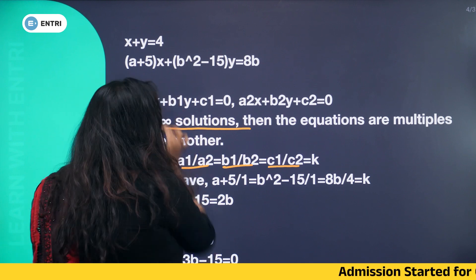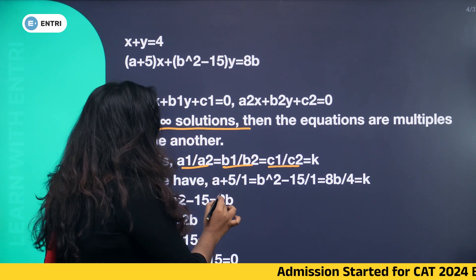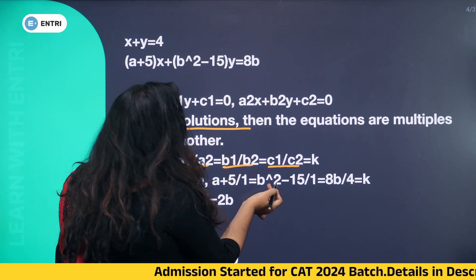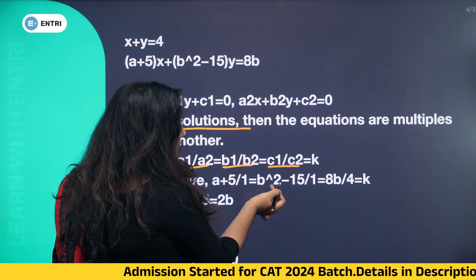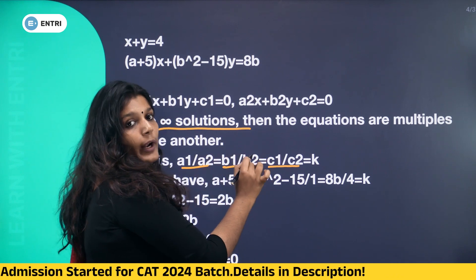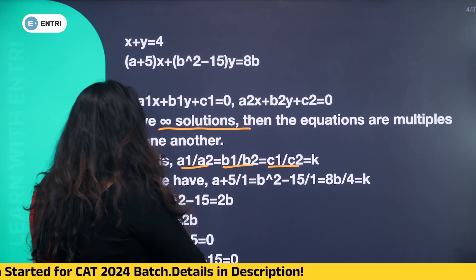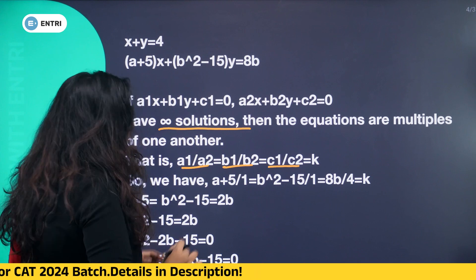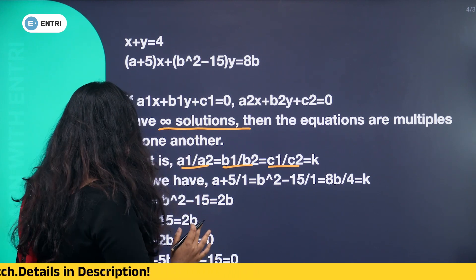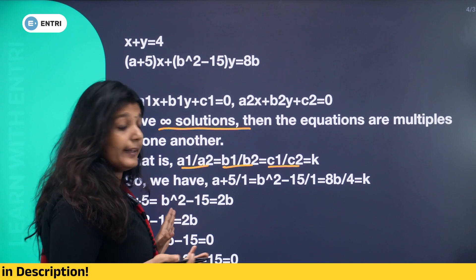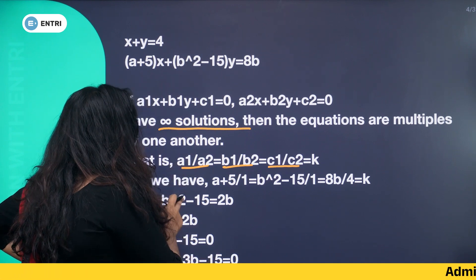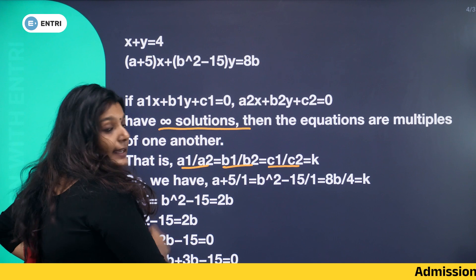Let's say a1 equals a plus 5, divided by 1. b1 equals b², minus 15, equals 1. And c1 equals 8b divided by 4. So from the condition, a plus 5 equals b² minus 15 equals 2b.